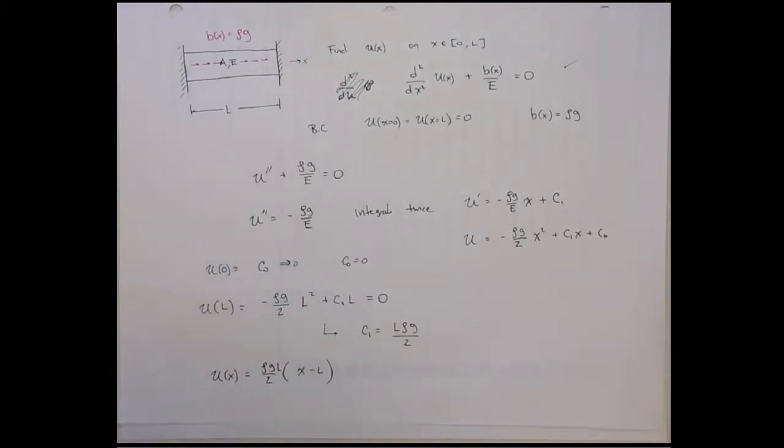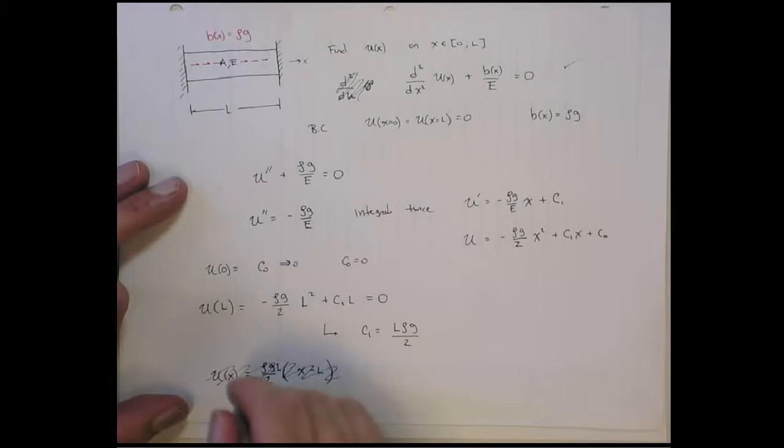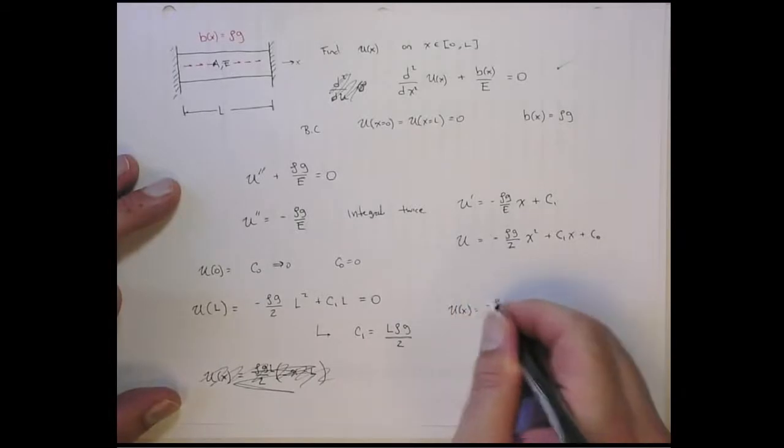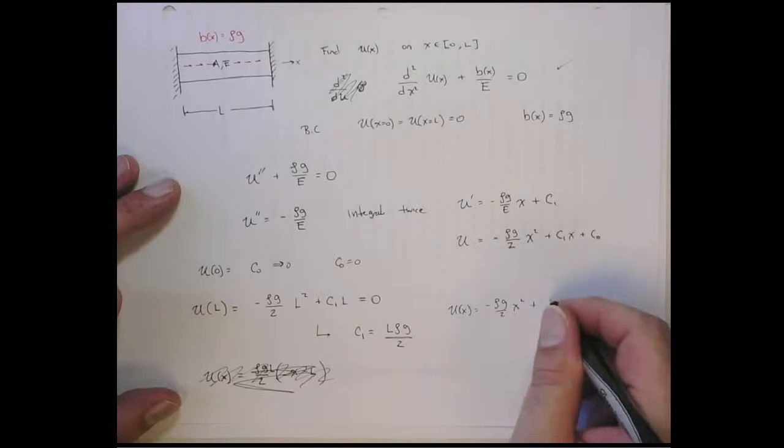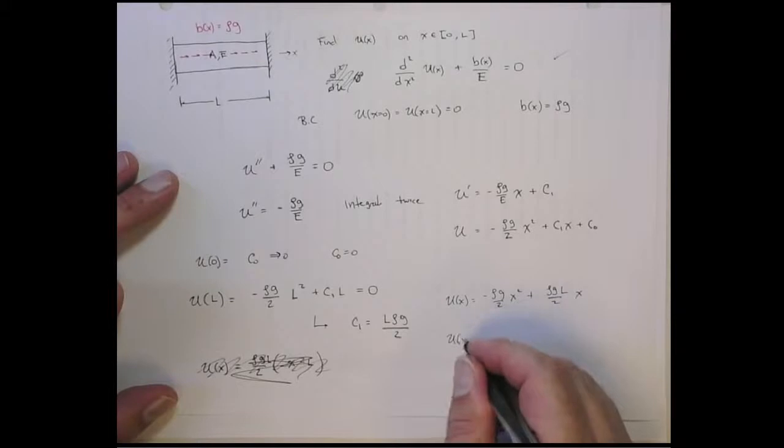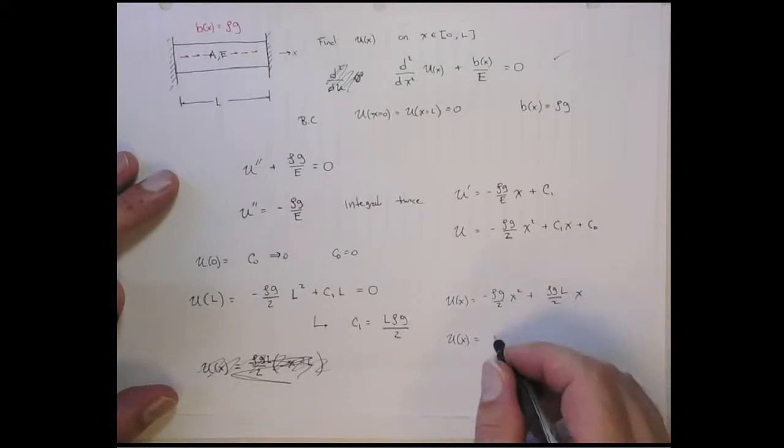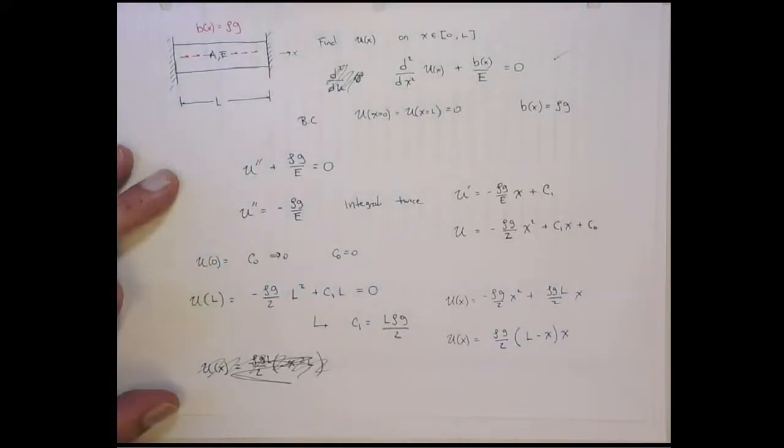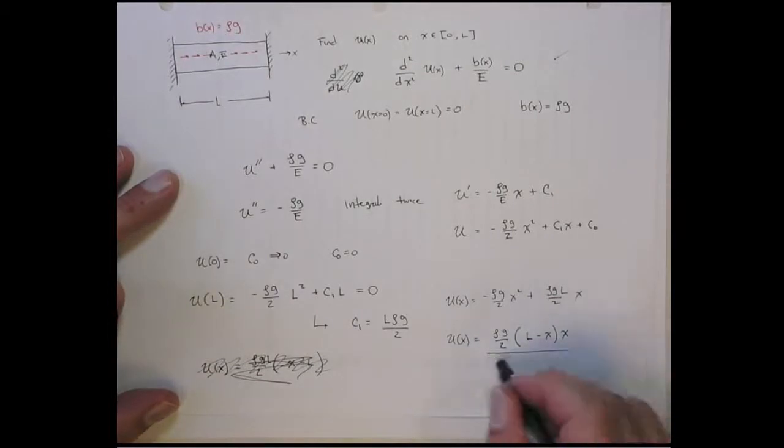And that gives me, in general, the displacement field is going to be... wait, is that what it is? Oh, what am I doing? Sorry guys. My bad. I'm plugging into the wrong one. Let's plug it into here. Let's be careful. So I've got u of x is minus ρg over 2E times x squared plus c1, which is ρgl over 2E times x plus 0. So now I can take out the ρg over 2E.